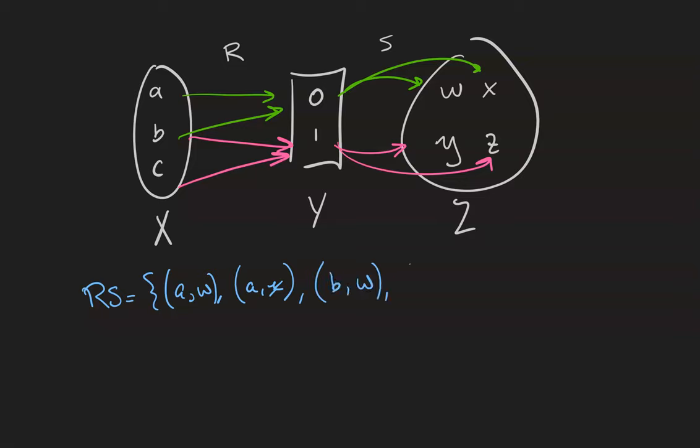B will be paired with everything in Z, because B is paired to everything in Y, and everything in Y can get to something in Z. And C will be paired to Y and Z via 1.